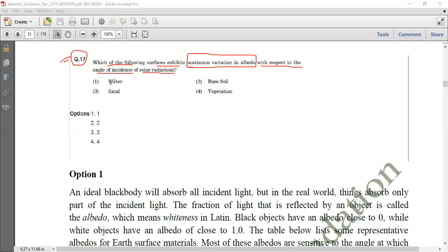The correct answer is water. We will see the detailed explanation of this, why water shows a maximum amount of variations with respect to albedo, depending upon the angle at which the solar radiation strikes. The correct answer is first, which is water. Now, let's see some of the detailed explanation why it is water.